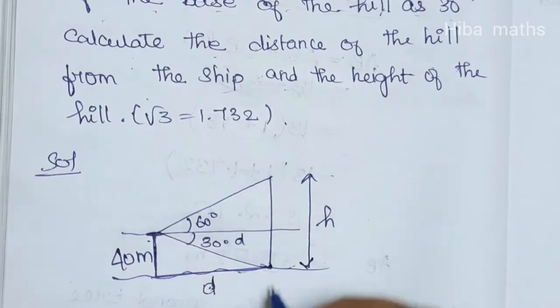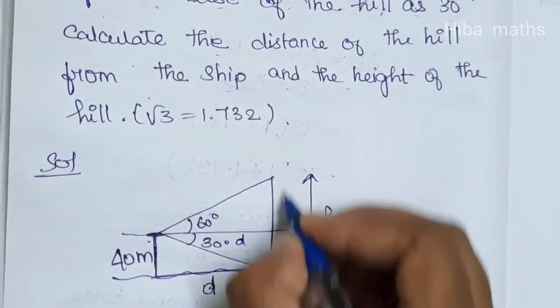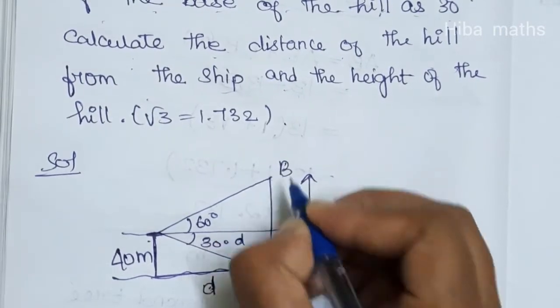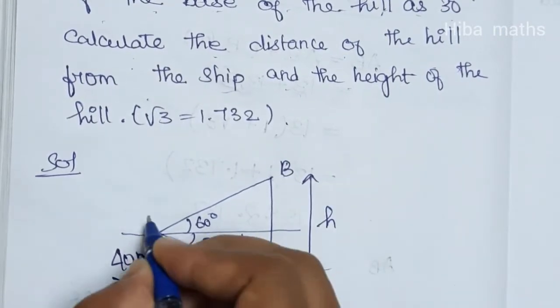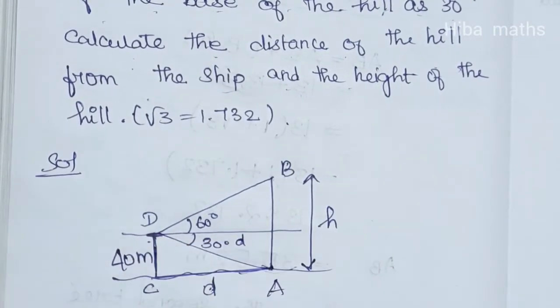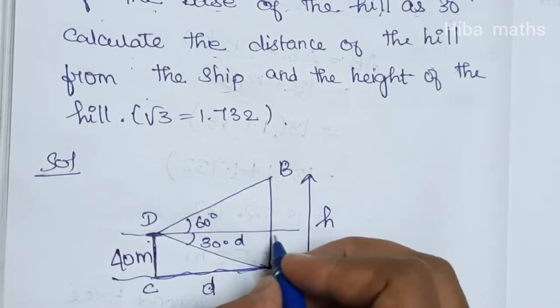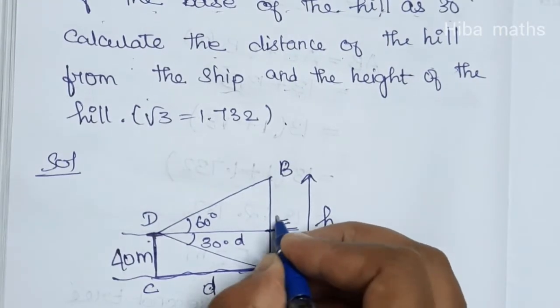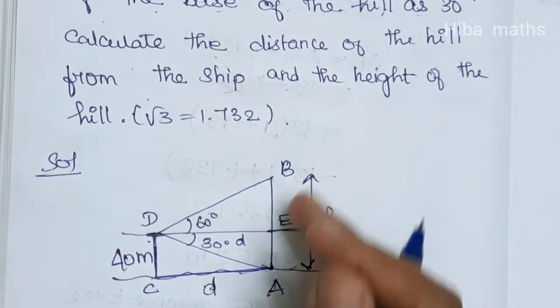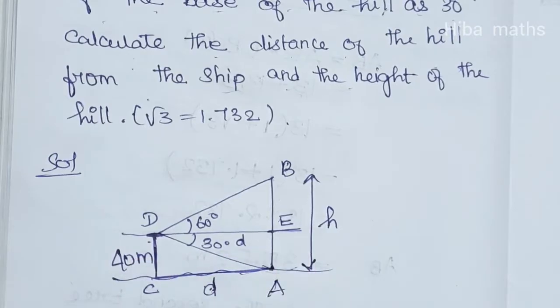In the diagram, the points are labeled: this is A, this is B, this is C, this is D, and the top of the hill is E.